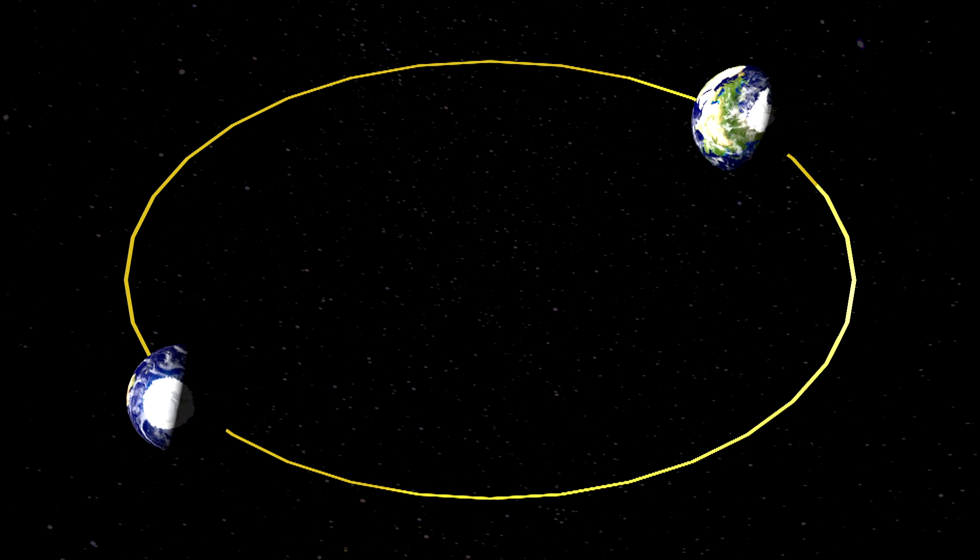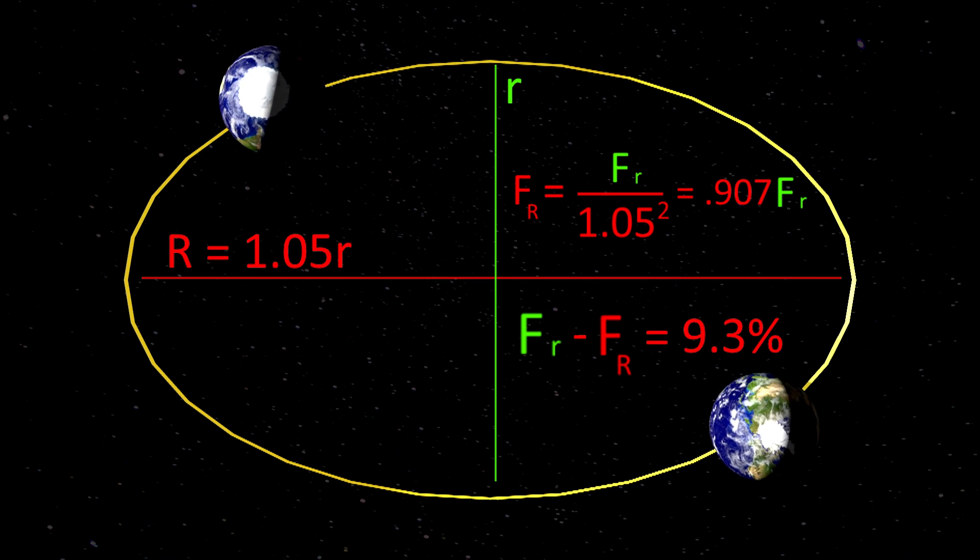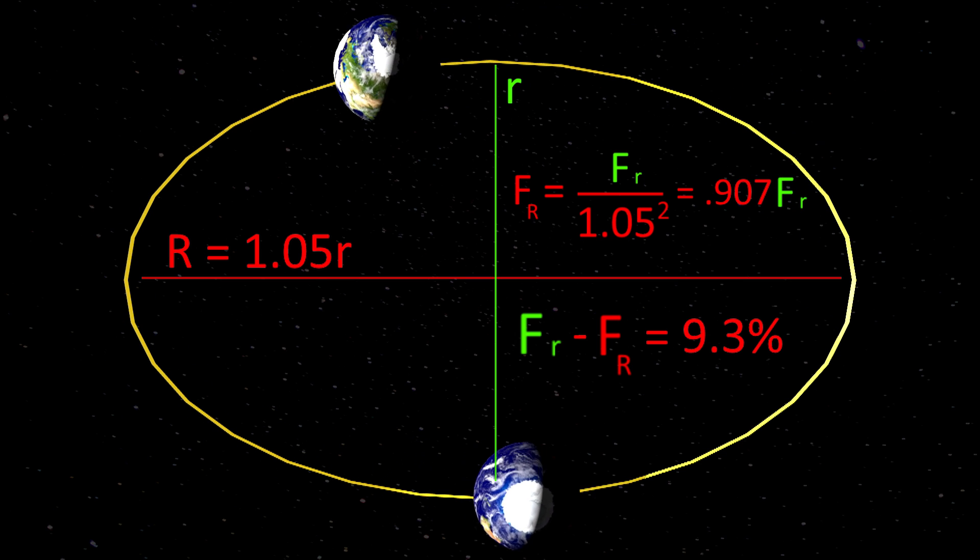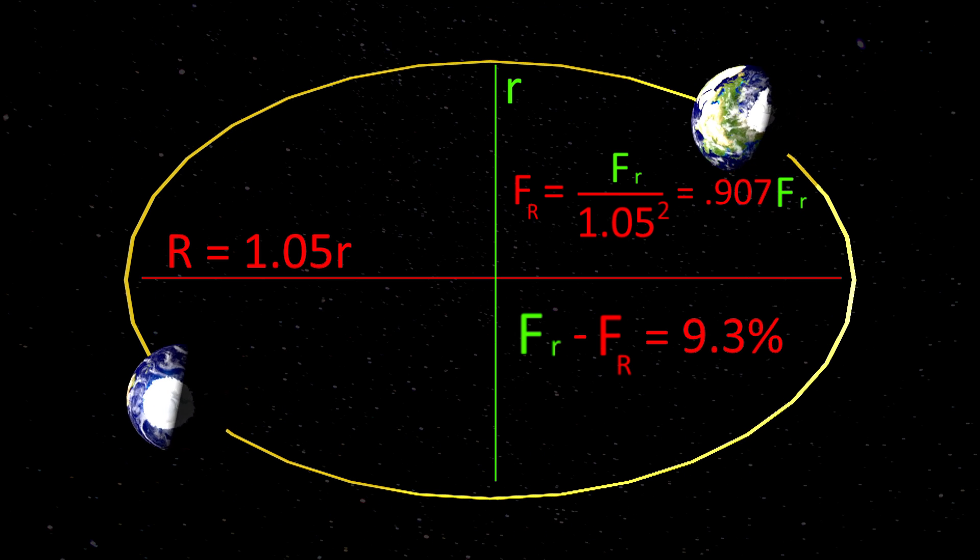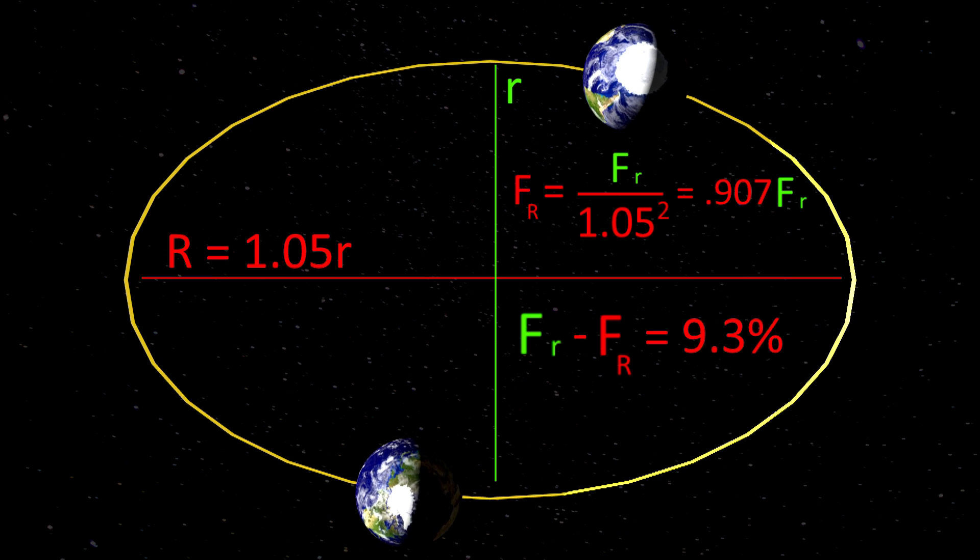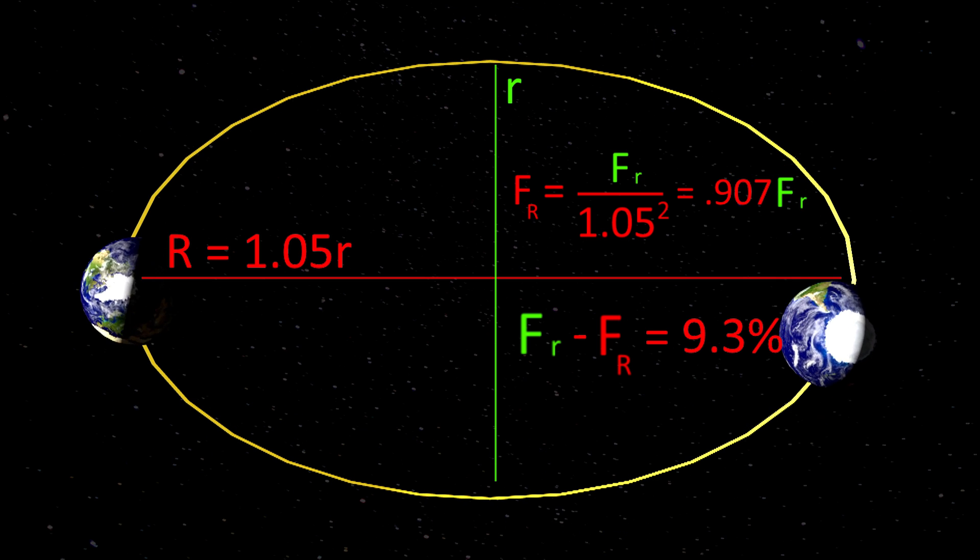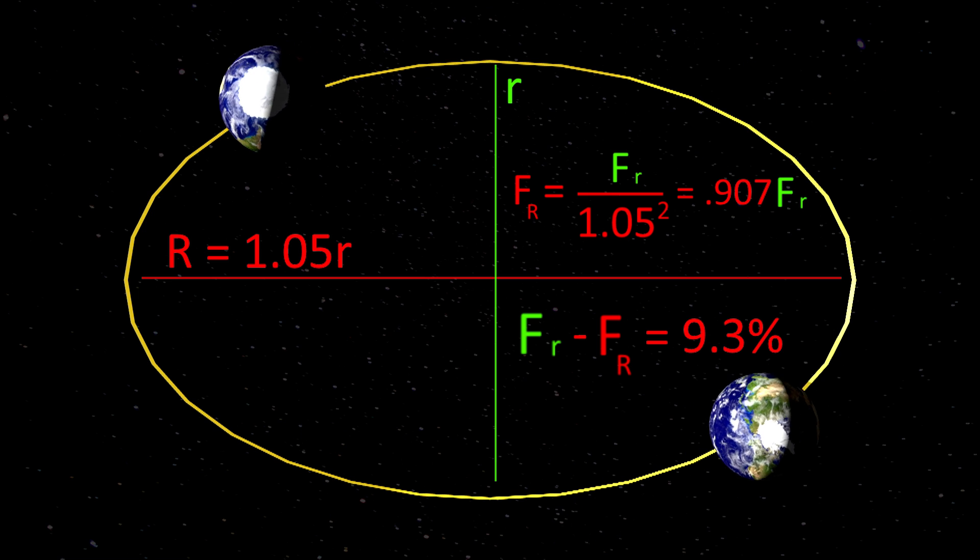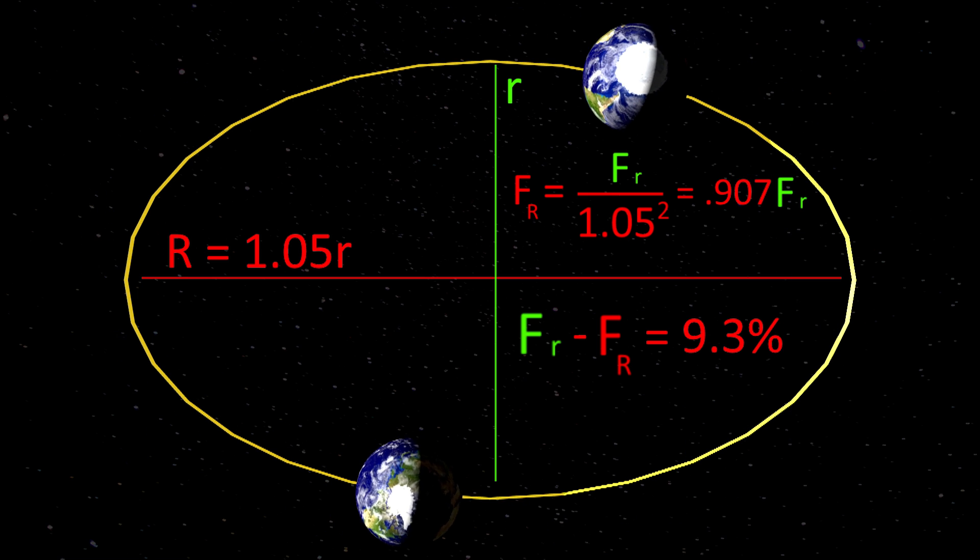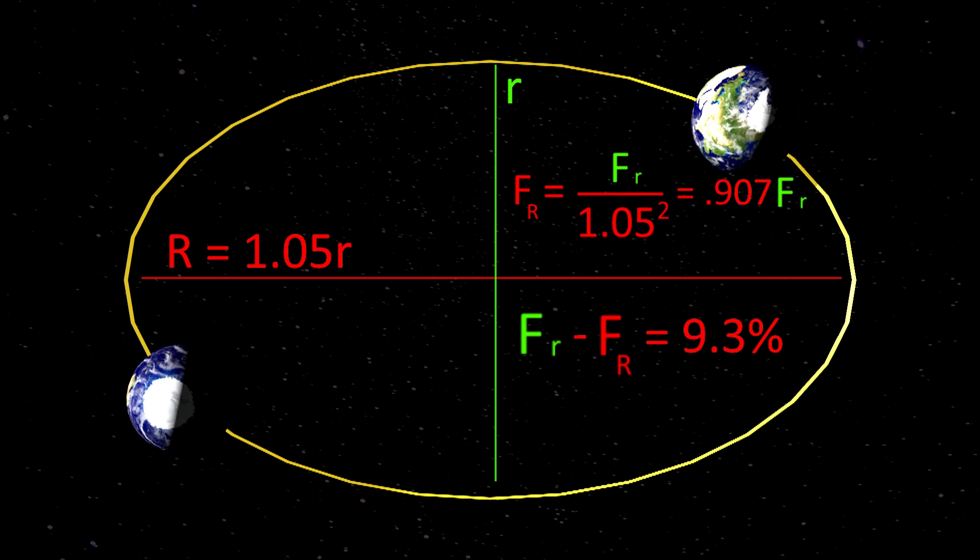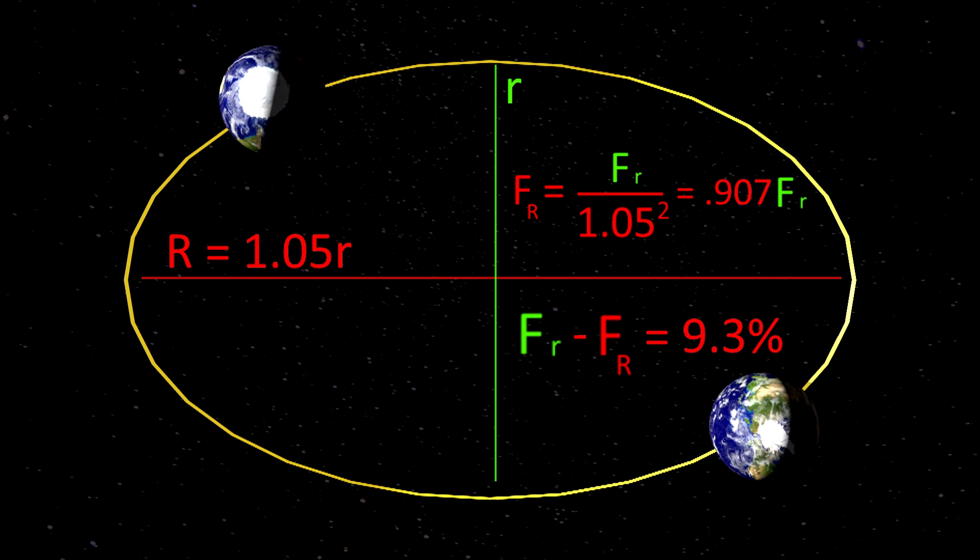A very mildly eccentric orbit that saw the two planets just 5% further apart than when they were closest would mean the gravity between them was 9.3% lower than when they were closest. So the distortion caused by that 24 hour, 9.3% drop in force pulling each world together would get you pretty decent tides, considering that the change in force is a good deal stronger than the total force the Moon exerts on the Earth.